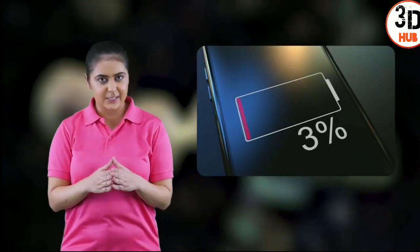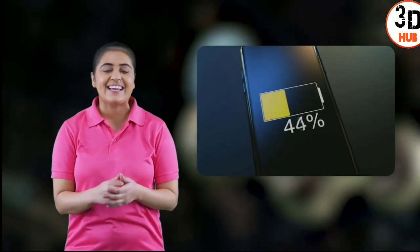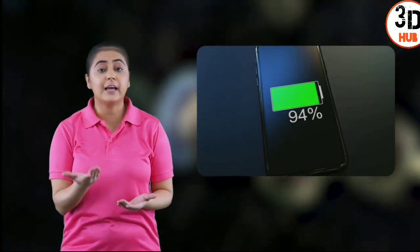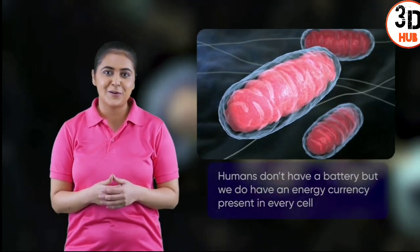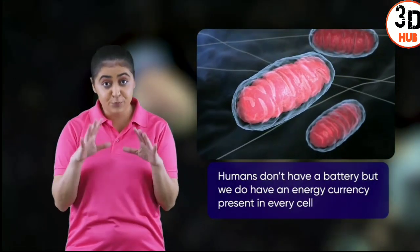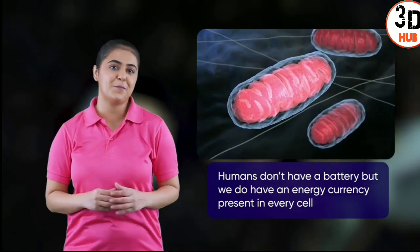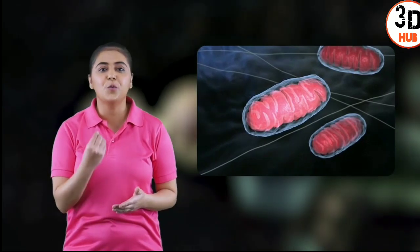Your phone gets its power from the battery. Every time your phone runs out of charge, you recharge the battery and the phone restarts. Although humans can't be recharged, we do have something called the energy currency that is present in every cell of our body. This currency is the source from where we get our energy.